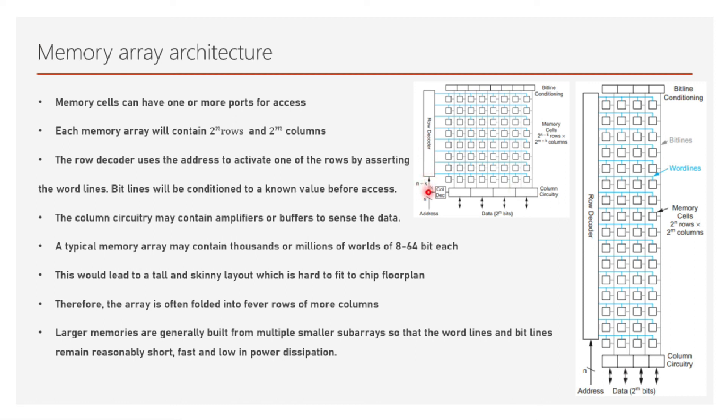So this is how we will have two power n minus k rows and two power m plus k columns. I hope you got some idea in this video about memory array architecture. Thanks a lot for watching, I'll see you in the next video. Bye.